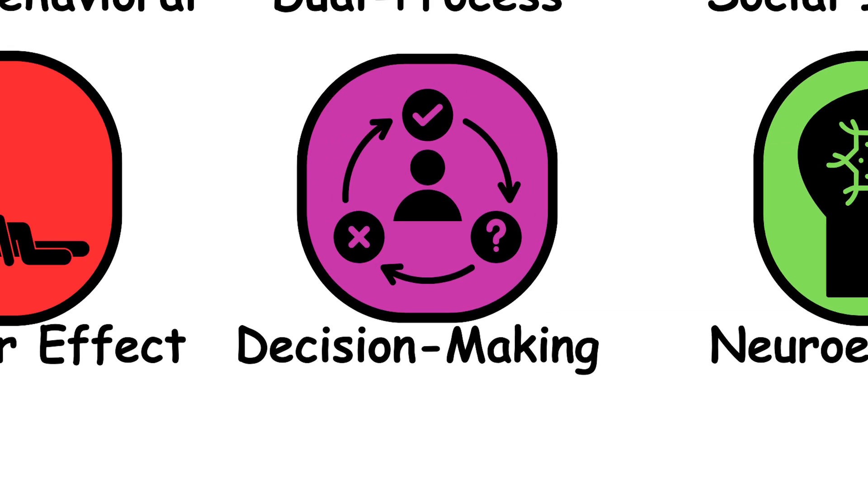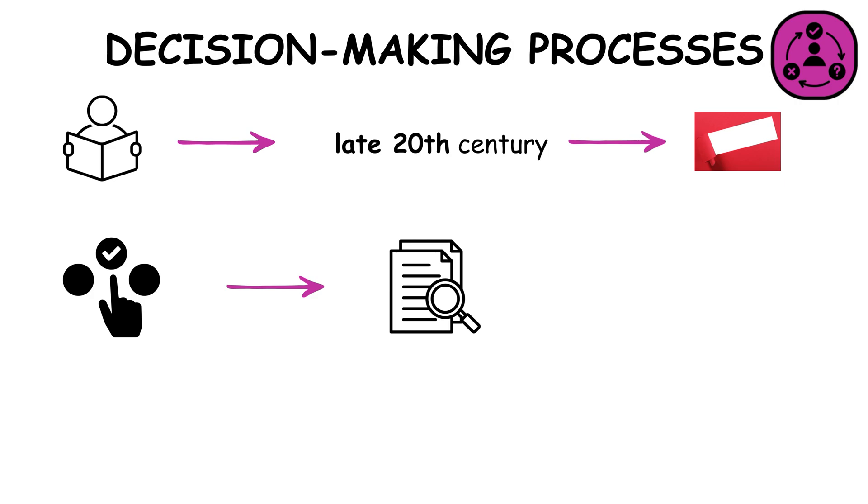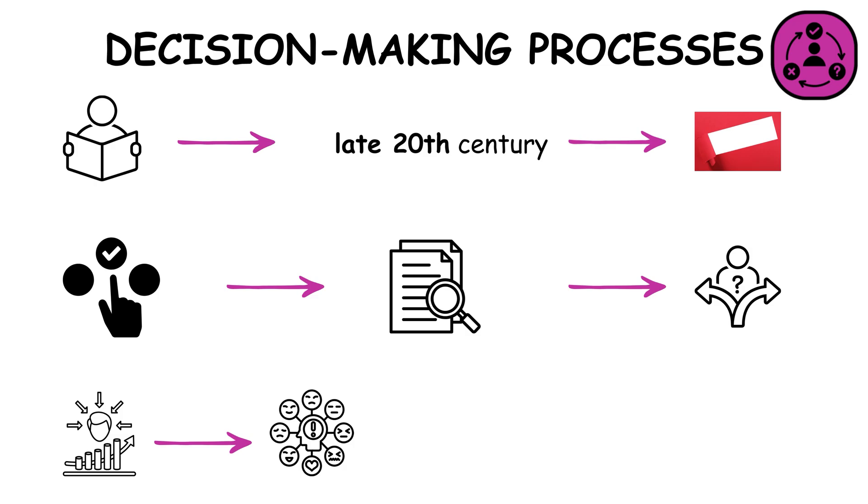Decision Making Processes have been extensively studied since the late 20th century, revealing how humans make choices. Research shows that decision making is influenced by a mix of rational analysis, emotions, biases, and social pressures.